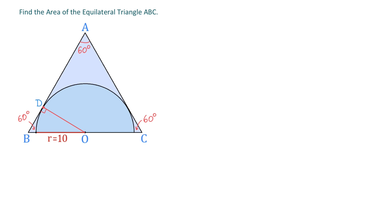So now we have a right triangle O, B, D. And in this triangle, if this angle is 60 degrees, then this one is 30 degrees. We know that side OD is 10 units because this is the radius of the semicircle. Then using these angles, we can find the hypotenuse OB.